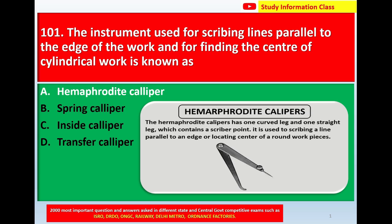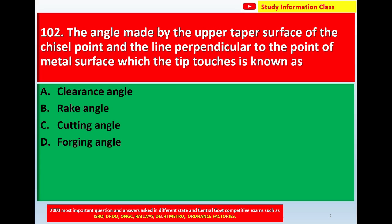Question 102 description: The angle made by the upper taper surface of the chisel point and the line perpendicular to the point of metal surface which the tip touches is known as — options: A: clearance angle, B: rake angle, C: cutting angle, D: forging angle. For this question, the correct answer is rake angle.